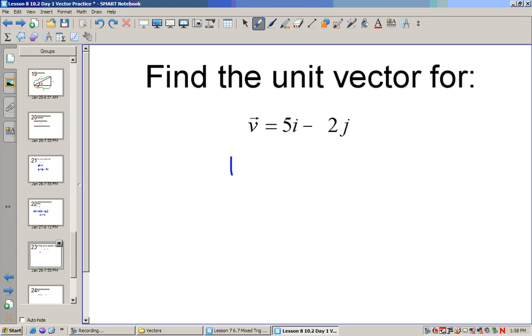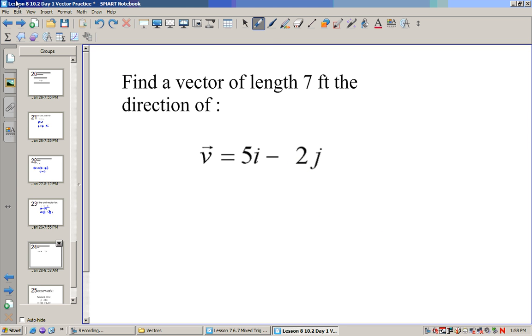So let's find the unit vector for this. So first we need to find the magnitude, which is the square root of 25 plus 4, which is 29. So my unit vector is just going to be five over root 29 i minus two over root 29 j. We could rationalize these if we want, but it's fine if we just leave them like that. If I want to find a vector of length seven in that direction, I'd want to find seven times my unit vector, which would be seven times five, which would be 35 over root 29 i, seven times negative two, which would be negative 14 over root 29 j.